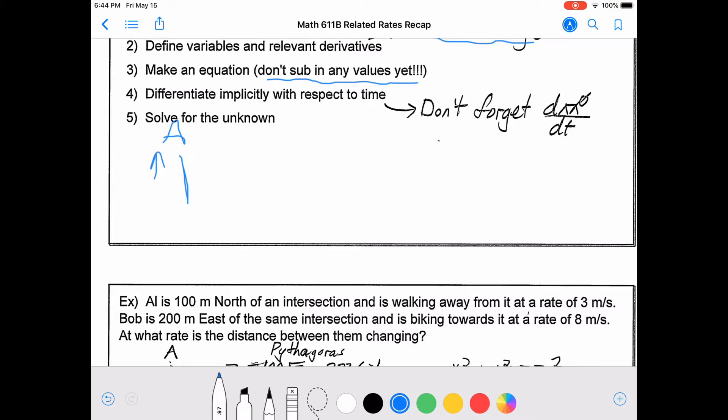And the derivative would be, so if this is y, the derivative would be 3 meters per second. That derivative is positive because the distance between Al and the intersection would be increasing because he's walking away from it.